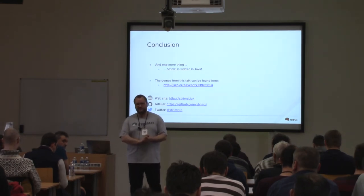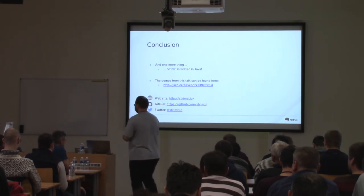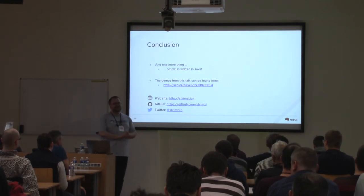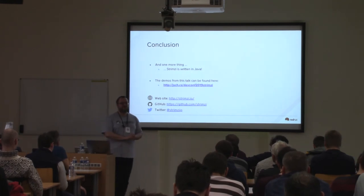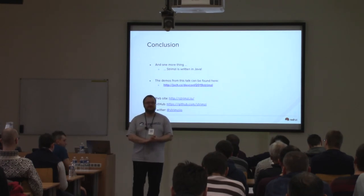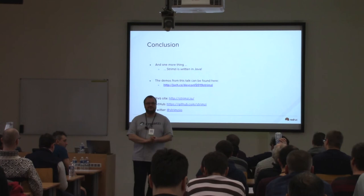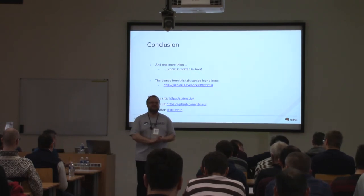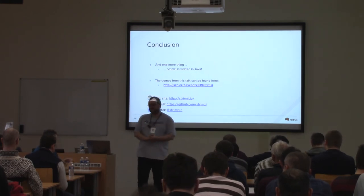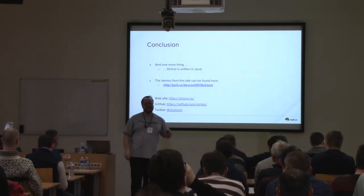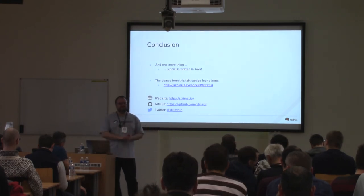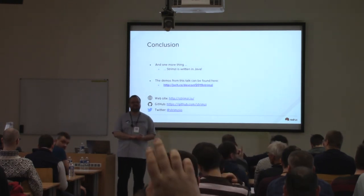A question about other components like the schema registry: it's on our to-do list as well. We need to think about licensing — we want to use really open-source components that everyone can use for any purpose, and the Confluent schema registry license changed recently to the Confluent Community License, which is not as permissive as Apache License 2.0. But we have plans to support it — once implemented, you would either specify it as part of the Kafka custom resource or it would have its own custom resource.